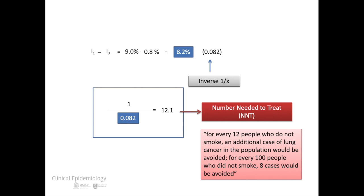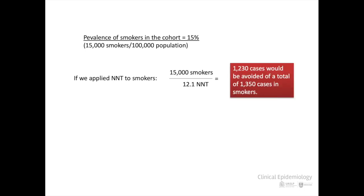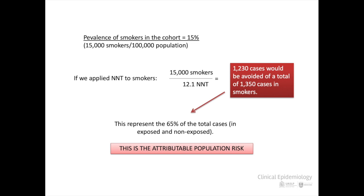For every 100 people who did not smoke, 8 cases would be avoided. The next thing we should know is how many people smoked in the population study. In our example, there were a total of 15,000 smokers. If we apply the NNT, we will see that if those people had not smoked at all, we would have had 1,230 fewer cases. That is, 120 cases would have occurred anyway. This represents 65% of the total cases. This is the APR.